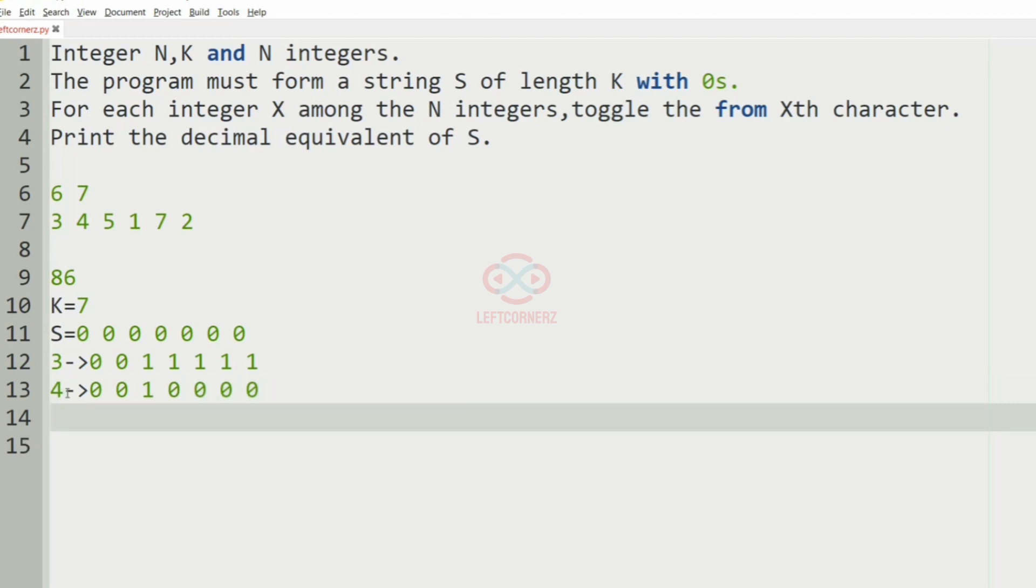And then we have five, it is 0 0 1 0 1 1 1. And then we have one so we'll toggle from the first position itself. So it is 1 1 0 1 0 0 0.